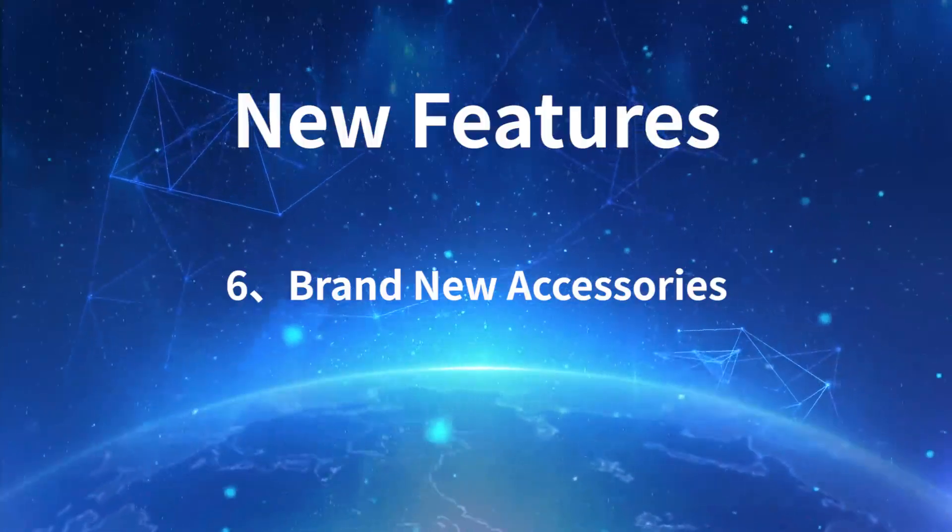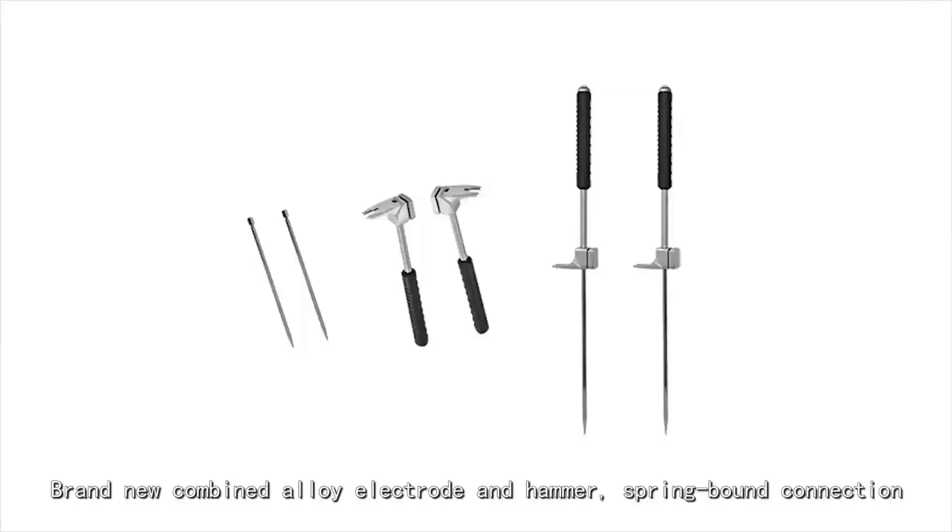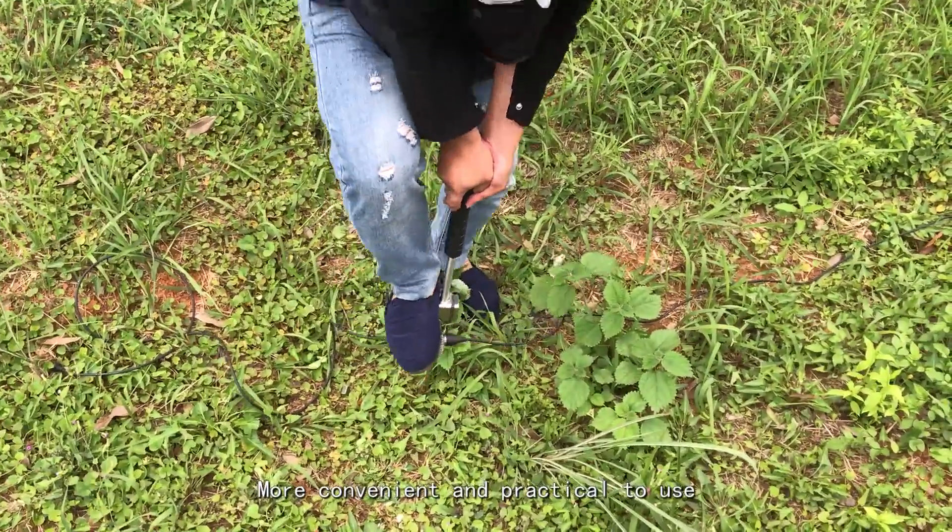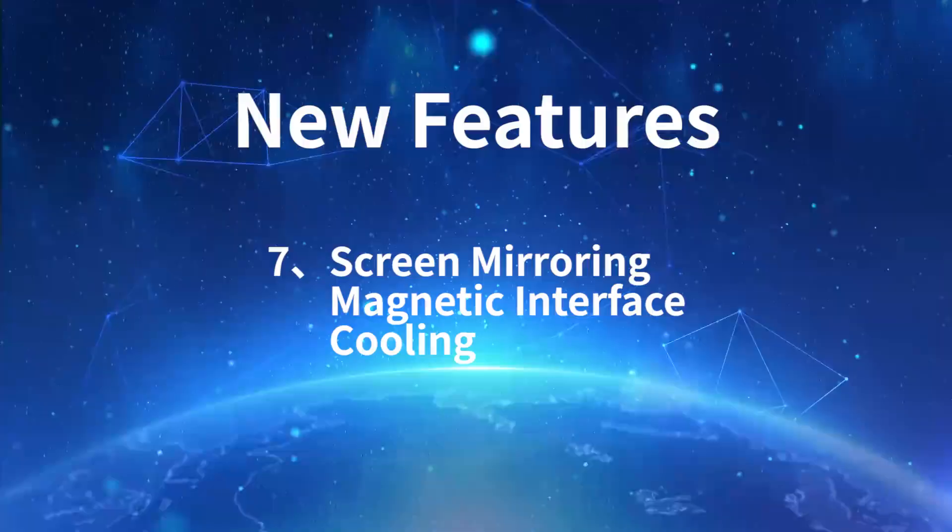Feature 6: Brand New Accessories. Brand New Combined Alloy Electrode and Hammer. Spring-Bound Connection. More Convenient and Practical to Use.